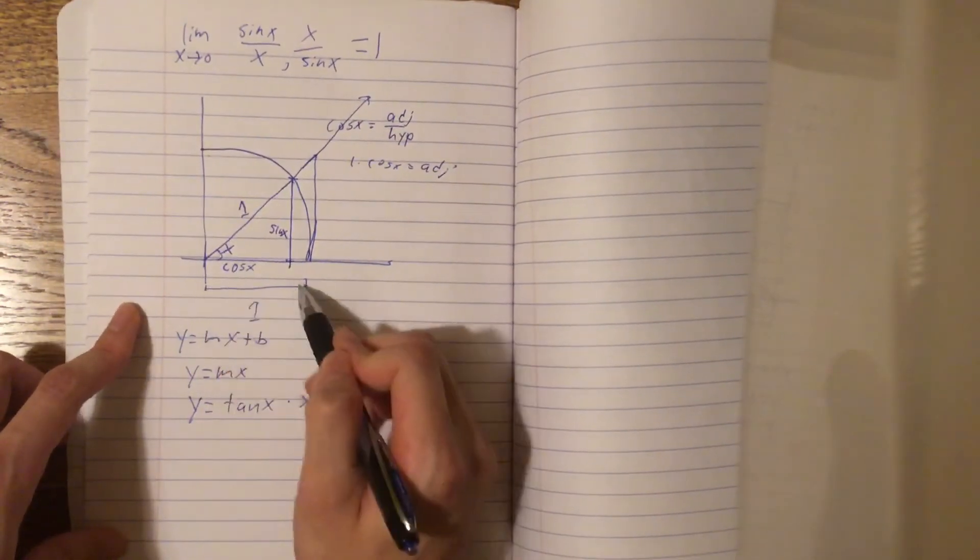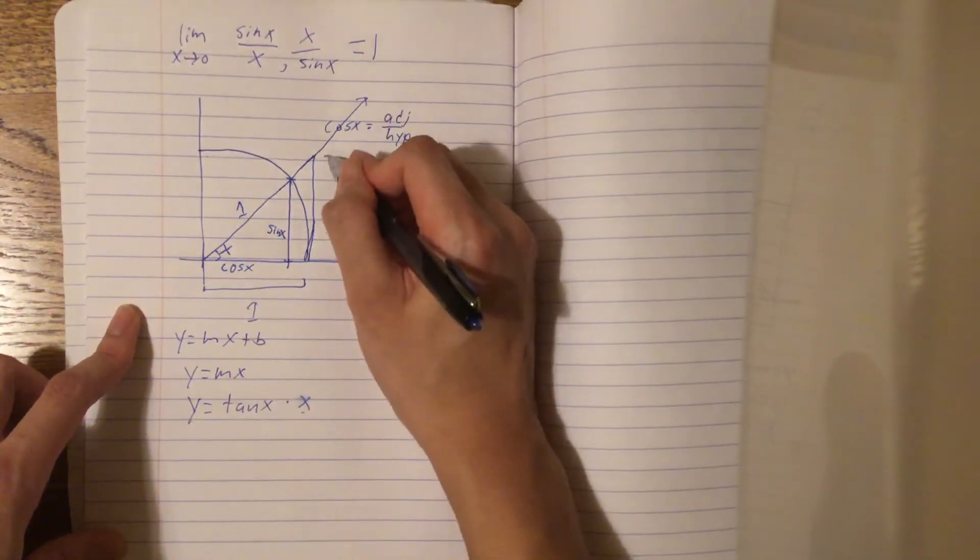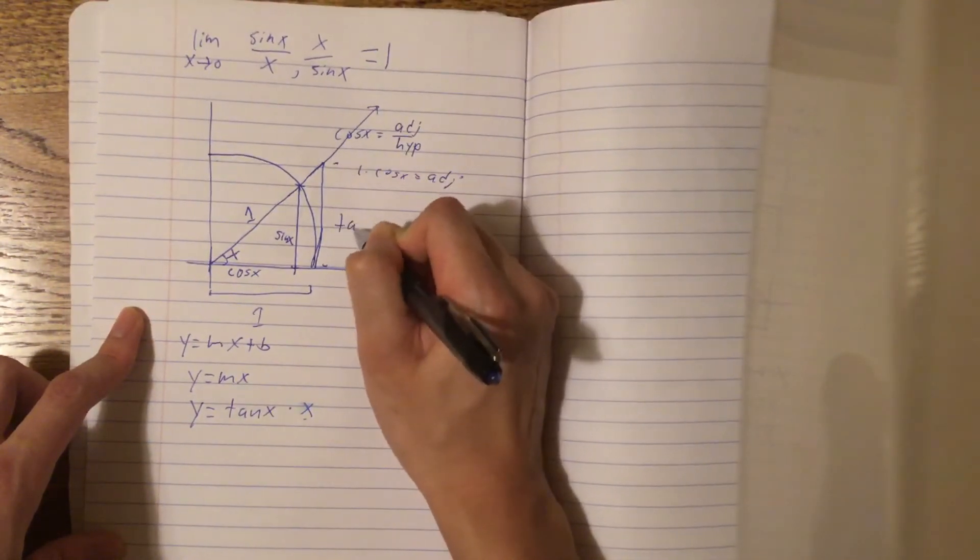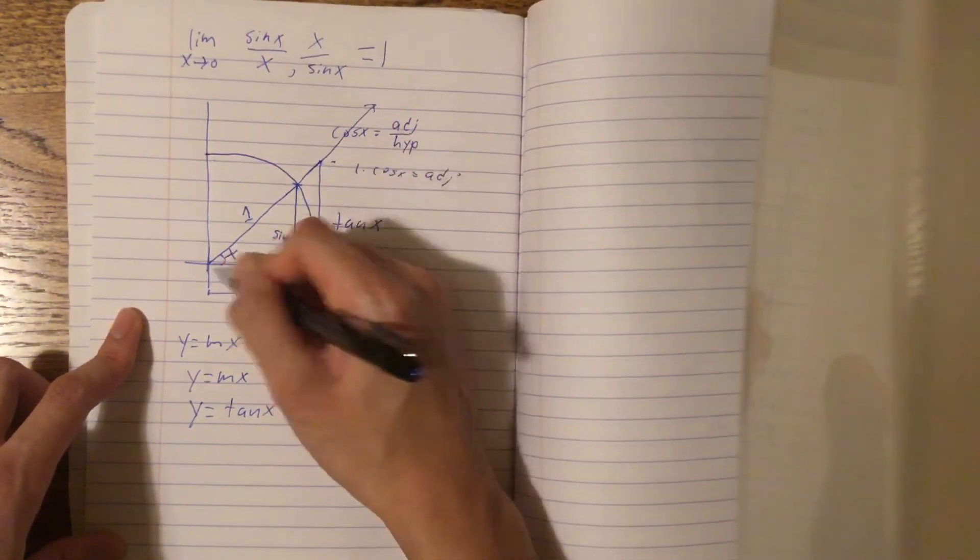Now, at x equal 1, the height equals tan x. So, this height right here is just tan x. From here to here is tan x, from here to here is sine x, from here to here is cos x.